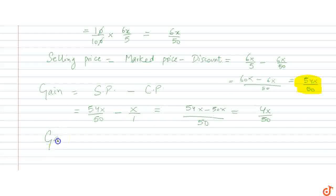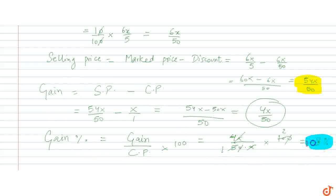Now we need to find the gain percentage. The formula for gain percentage is gain divided by CP into 100. So gain is 4X upon 50 divided by CP, divided by X into 100. This X and this X will cancel out. The zeros will cancel out. 5 will cancel 10 to give 2. 4 into 2 is 8%. So 8% is the gain percentage. The final answer is 8%.